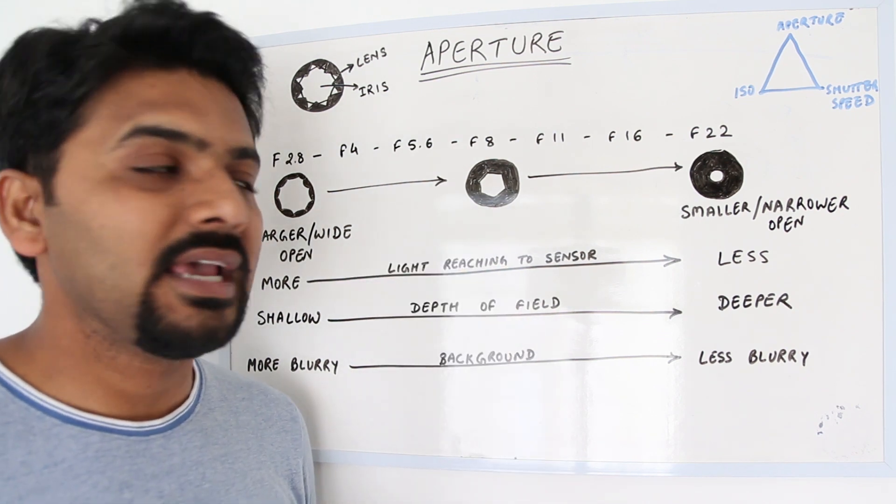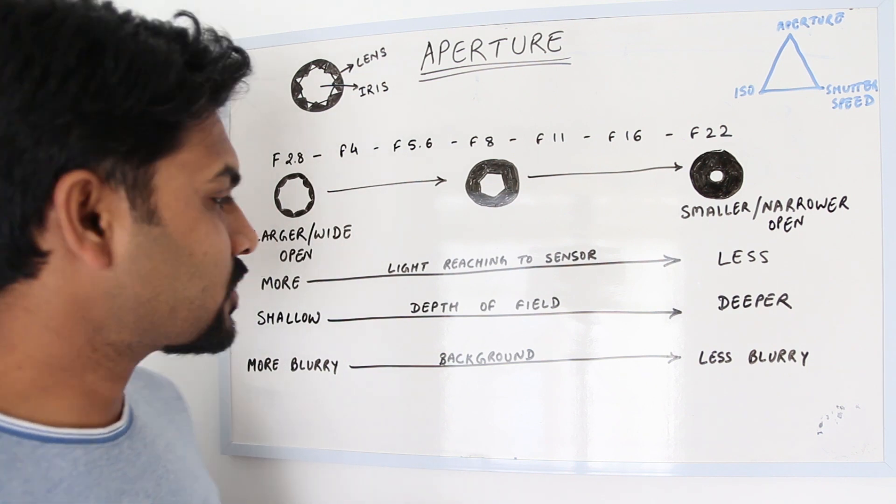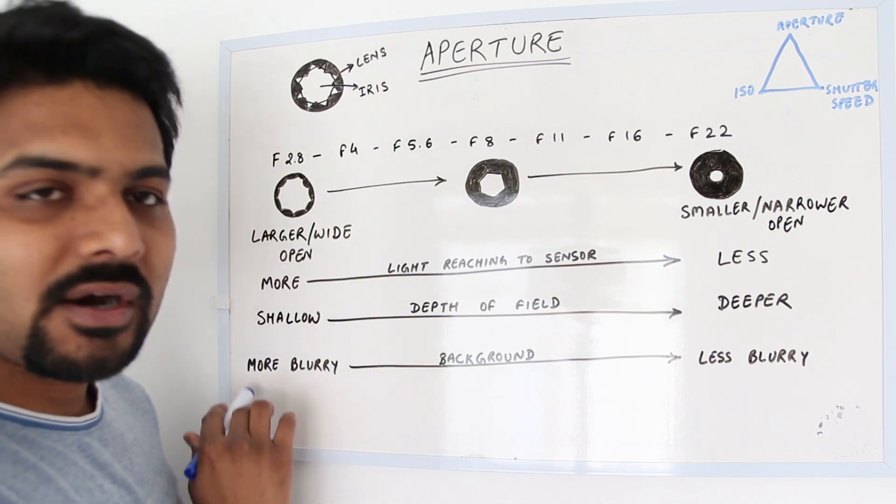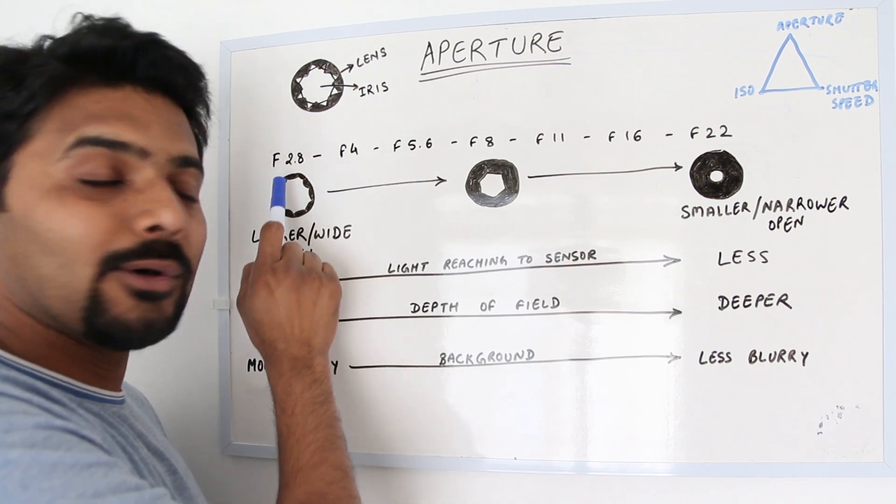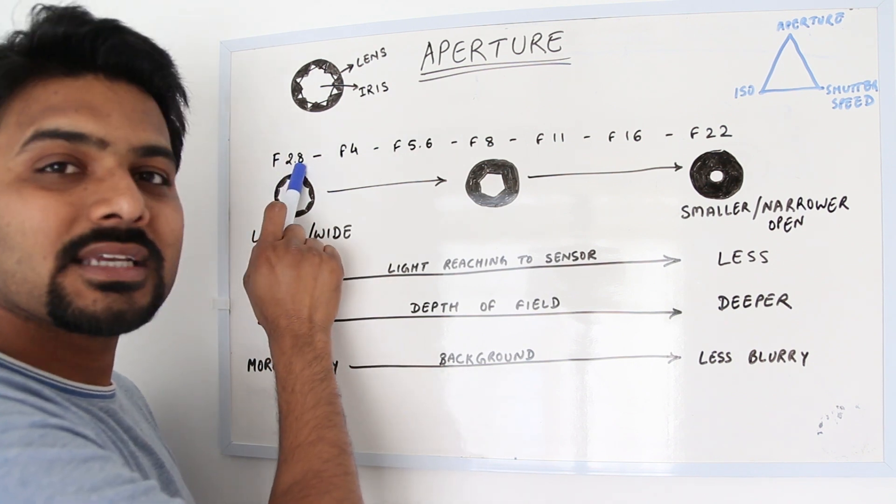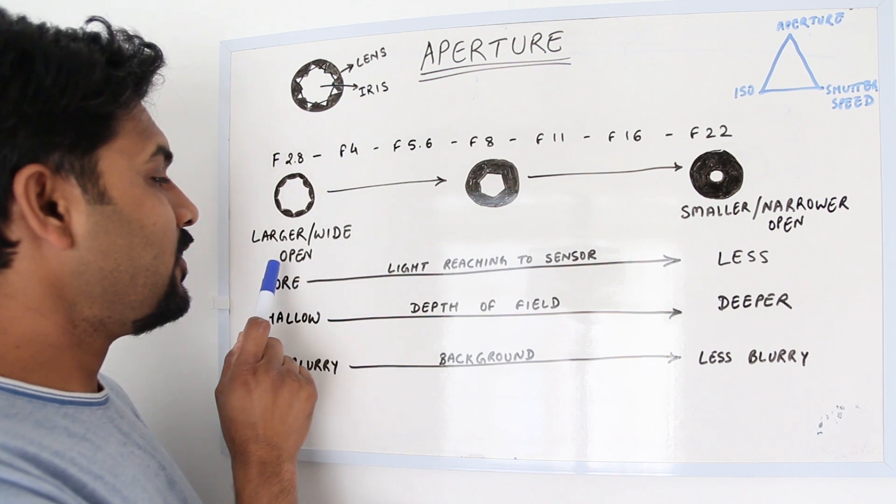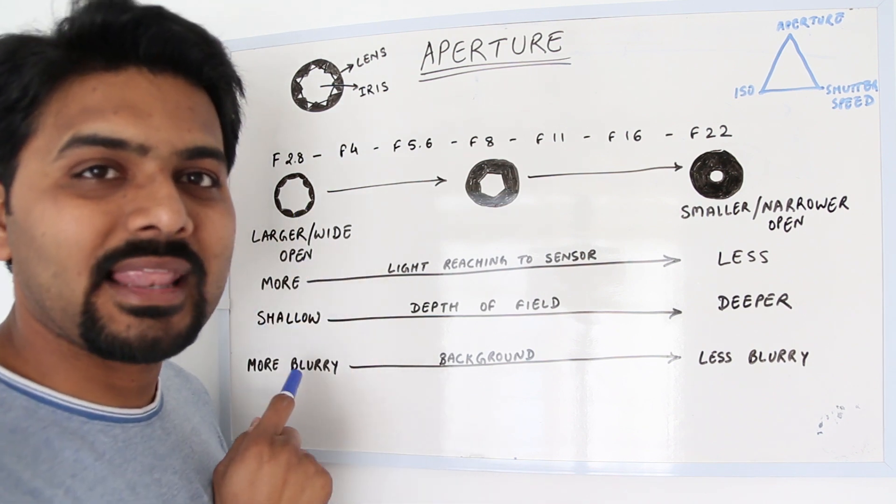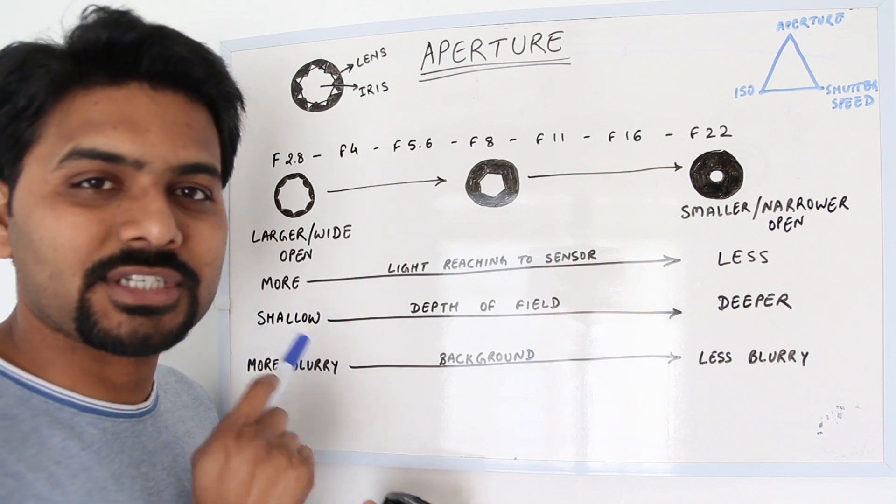Just remember: highest aperture or lowest f-stop numbers will give you a wide opening of the lens. The performance of that lens will be much higher in low light conditions.